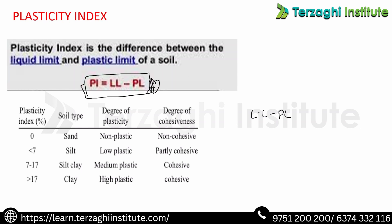Next is plasticity index. Plasticity index = Liquid limit − Plastic limit. When plasticity index is 0, the soil is non-plastic.